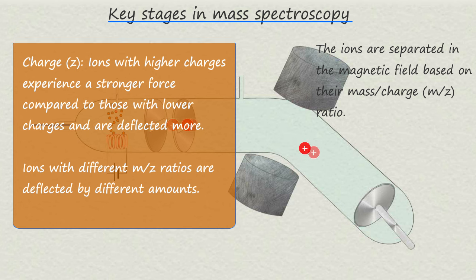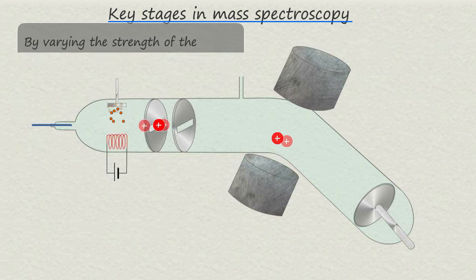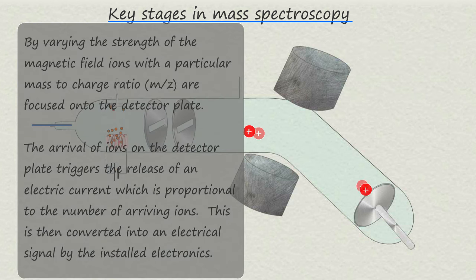The final step in the mass spectrometer is the detection step. Now by varying the strength of the magnetic field, ions with a particular mass to charge ratio can be focused onto the detector plate.